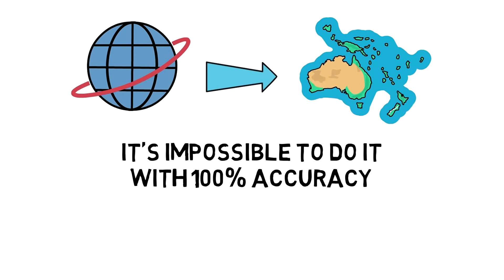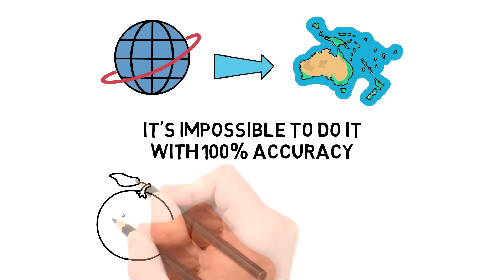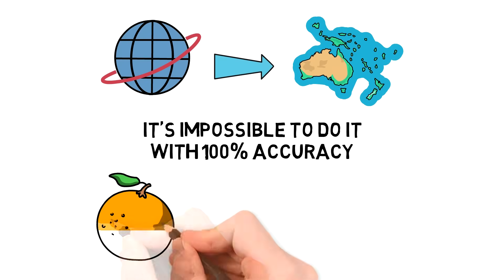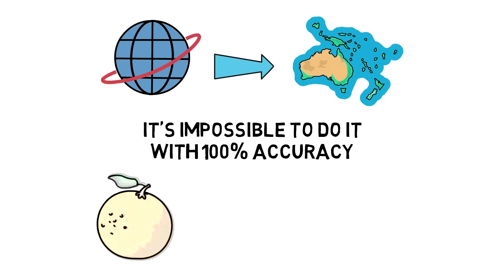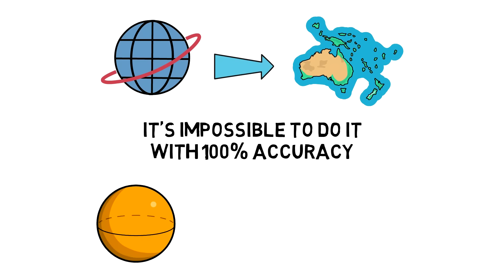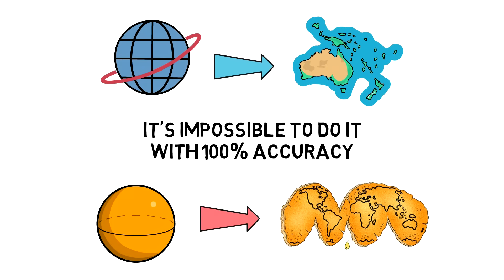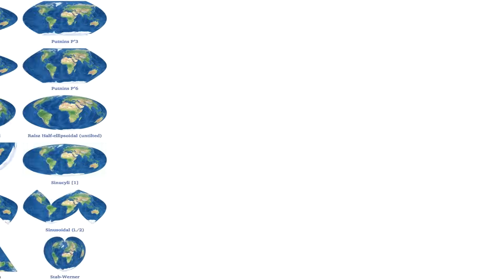A lot of times people use an orange peel to explain this issue. If you peel an orange, you can't flatten it out on a table without messing the peel up. And so, all projections of a sphere on a plane necessarily distort the surface in some way and to some extent. This is why we have a lot — and when I say a lot, I mean a lot — of map projections.